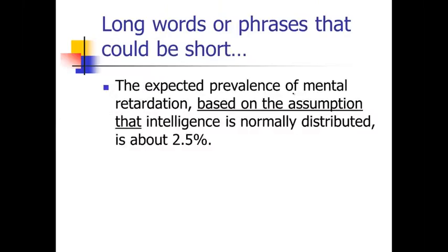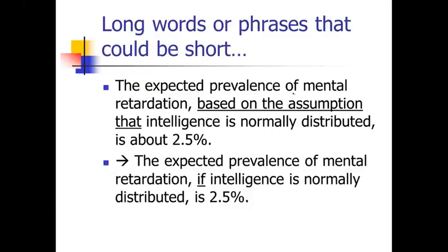Here's an example of a sentence that's got a little bit of a wordy phrase in it. The expected prevalence of mental retardation based on the assumption that intelligence is normally distributed is about 2.5%. Based on the assumption that, what's a short way to say that? How about just if. The expected prevalence of mental retardation if intelligence is normally distributed is 2.5%.